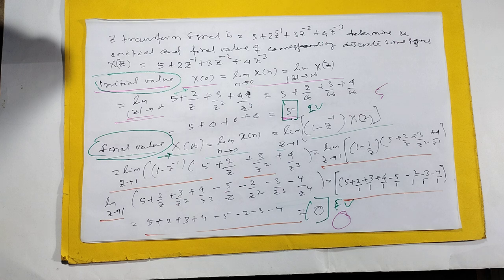Z transform of a signal is 5 + 2/Z + 3/Z² + 4/Z³. Determine the initial and final value of the corresponding discrete time signal.